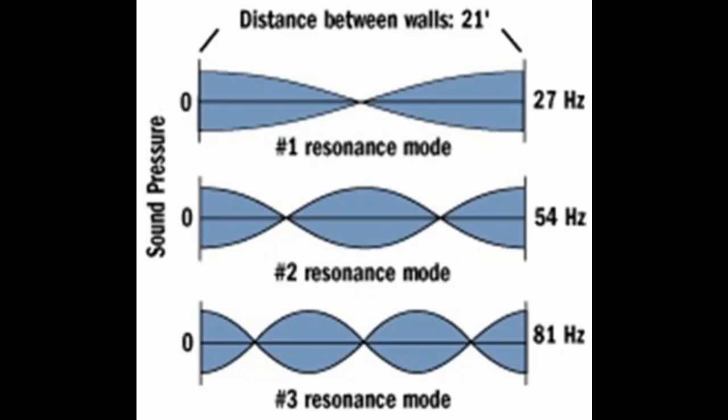In this chart we see a simple fundamental, second harmonic, and third harmonic mode. We would have these modes — and multiples of them — for each of the three axes. Especially problematic is when a room has evenly divisible dimensions; for example, an eight-foot ceiling and a sixteen-foot length. Then we're going to have similar frequencies stacking upon themselves, exasperating the problem even more.